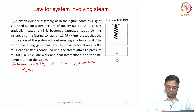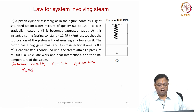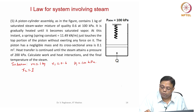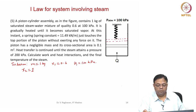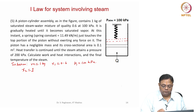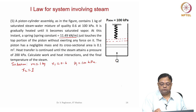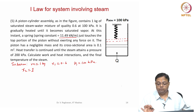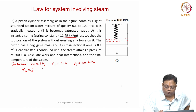At state 2, x2 equals 1, saturated vapour. When it is heated it moves up and becomes saturated vapour. At this point, the spring with a spring constant of 11.49 kilo Newton per meter just touches the top portion of the piston without exerting any force. So till this point it is a constant pressure process, and P2 is 100 kilopascals.